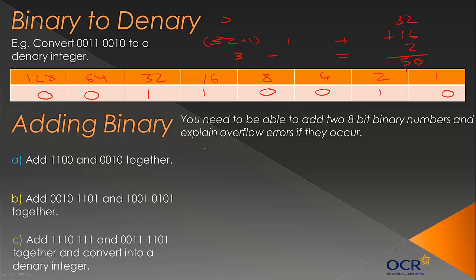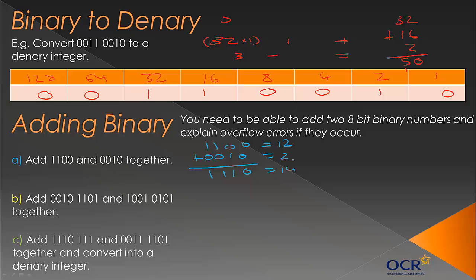Here's a really easy first example. It's literally just adding the way you would in normal maths — go along: 0+0 is 0, 0+1 is 1, 1+0 is 1, 1+0 is 1. That's our answer. We can double-check: the first number equals 12 in Denary (4+8), the second represents 2, and the result represents 14 (2+4+8). So 12+2=14. It works.